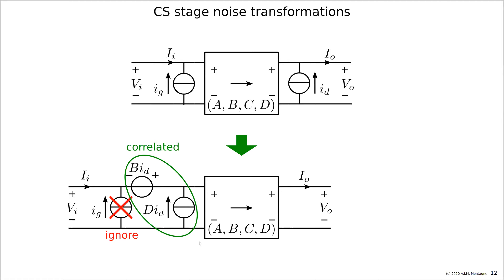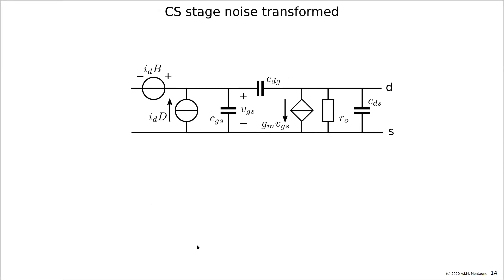In the small signal circuit of the CS stage, the result is: id·D as an input current source and id·B as an input voltage source — two correlated sources. The arrow and the plus/minus source sign account for the correlation: when id·B increases positively, id·D flows from source to gate.